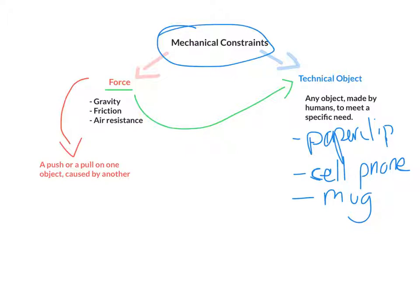So when we're talking about mechanical constraints, we're really talking about forces on objects and the effect that they have on these technical objects. So with mechanical constraints, there's actually five key different constraints. And what we're going to do is we're going to go through each one.